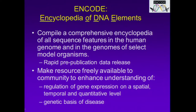So back in 2003, we started the ENCODE project, which stands for Encyclopedia of DNA Elements. The goal is to compile a comprehensive encyclopedia of all sequence features in the human genome and in the genomes of select model organisms. One of the hallmarks of this project is rapid prepublication data release. We really wanted to create a resource that was freely available to the community to enhance our understanding of gene regulation, as well as the genetic basis of disease.